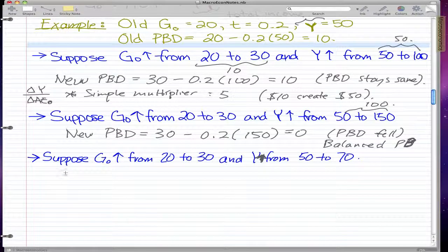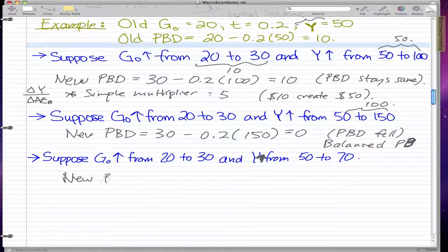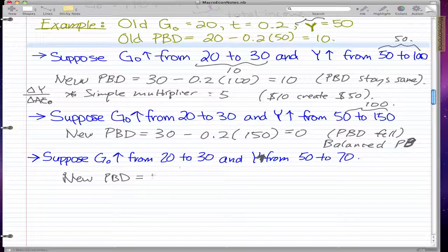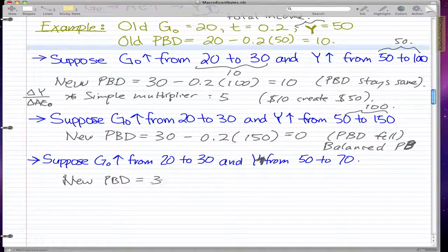The new primary budget deficit is 30 minus 0.2 times 70, and that would give us 16. So the primary budget deficit rose.